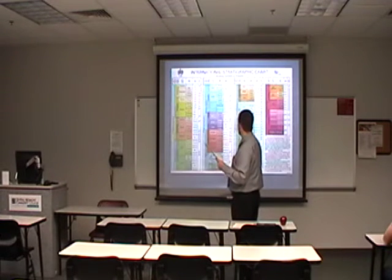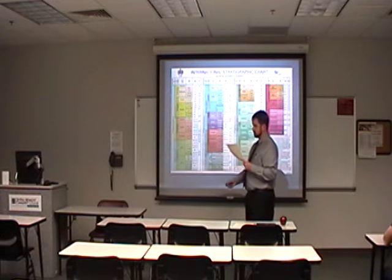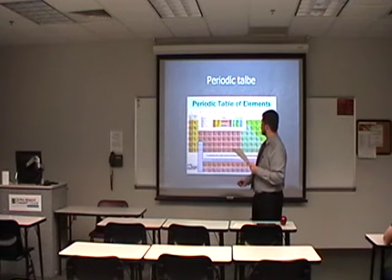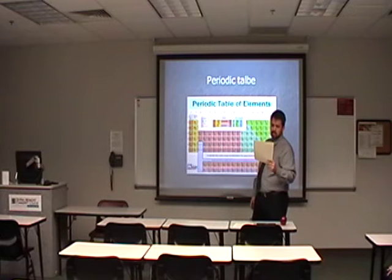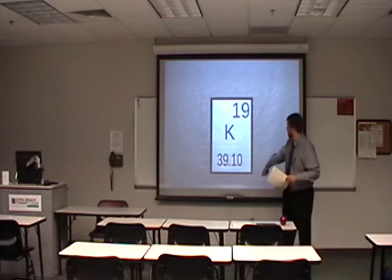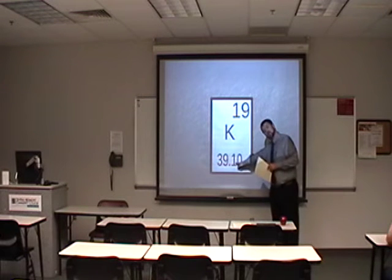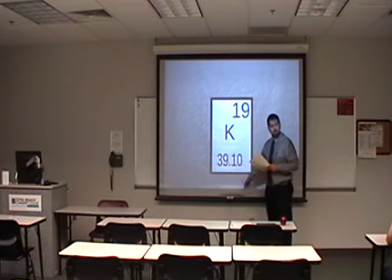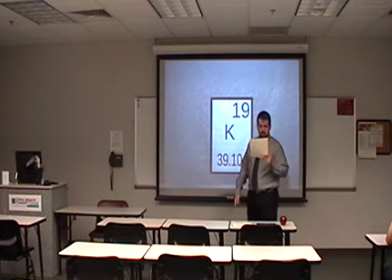Now, how do we know about this? It's because of isotopes. Every element on the periodic table has two numbers associated with it: the atomic number, which is the number of protons, and the atomic weight, which is the number of protons plus electrons.